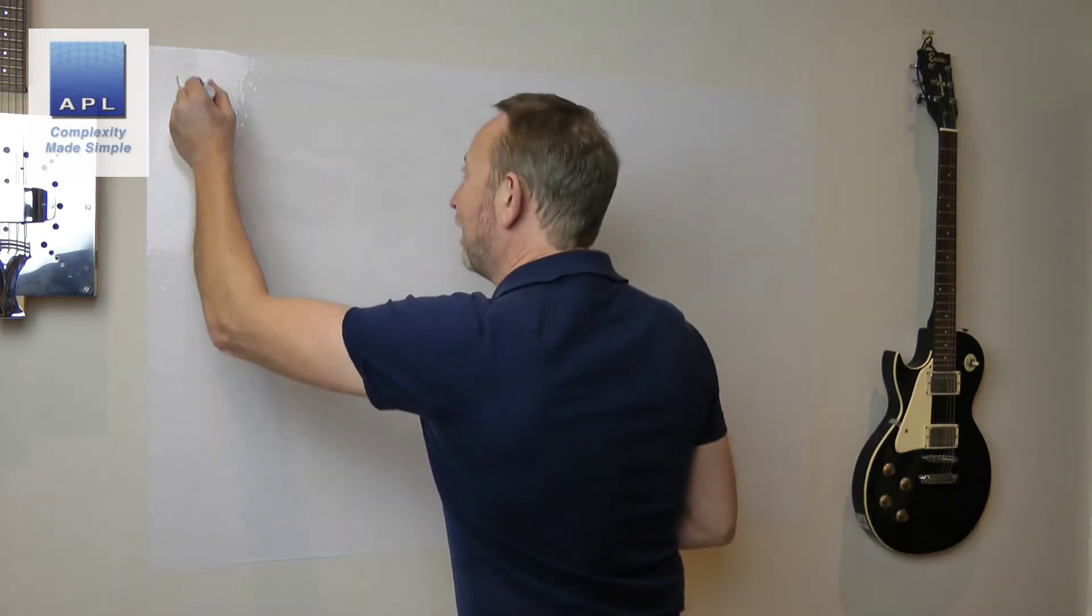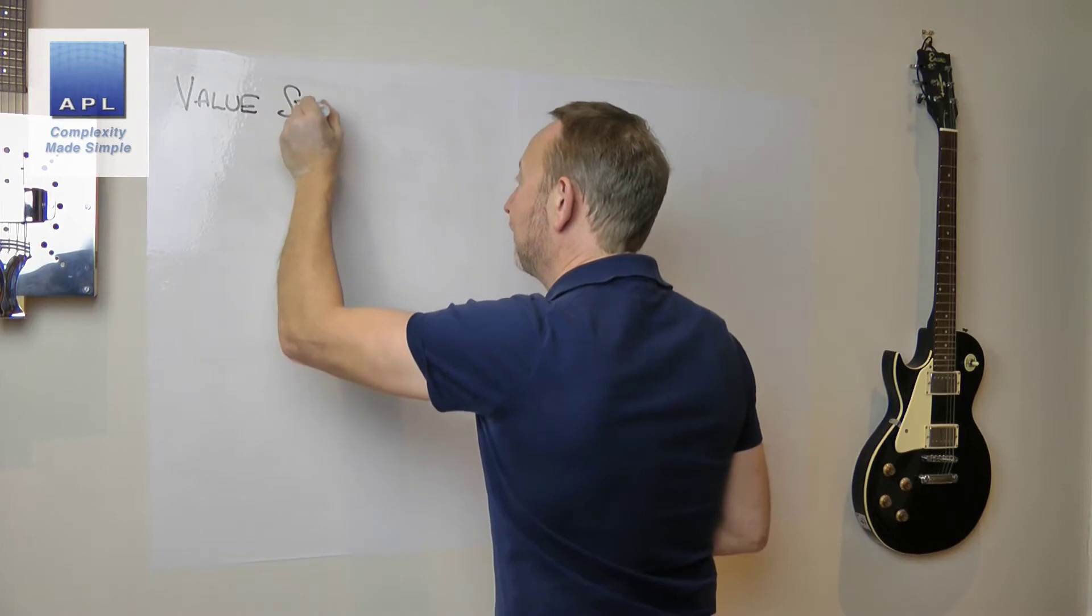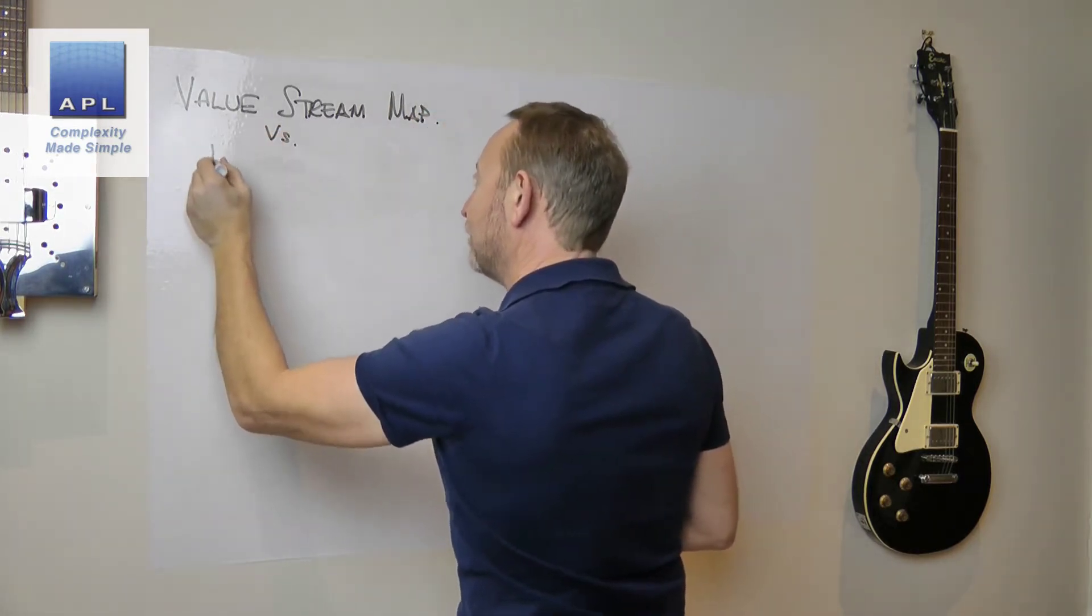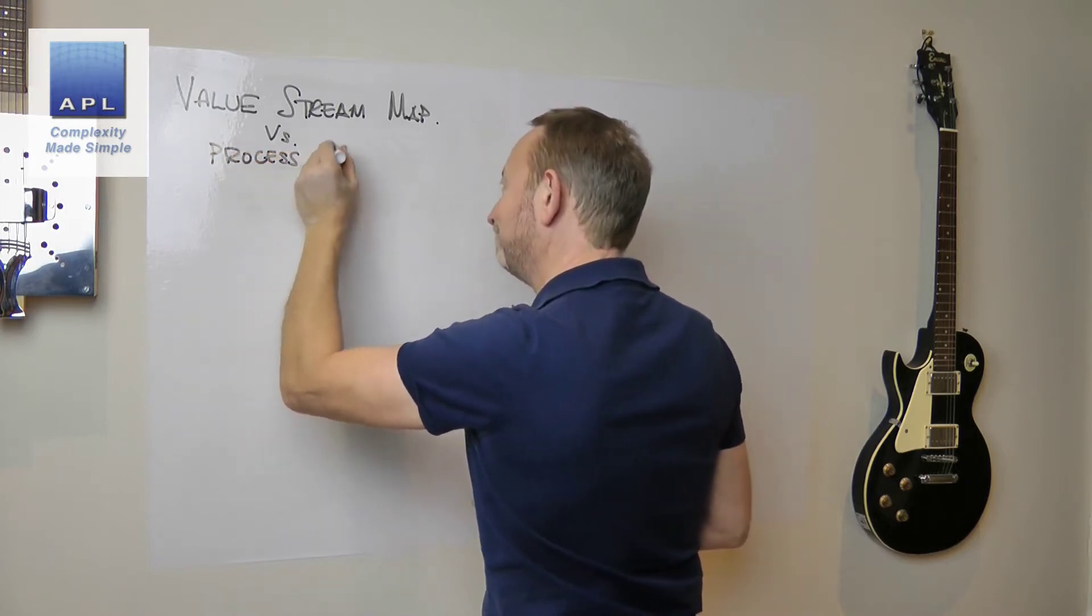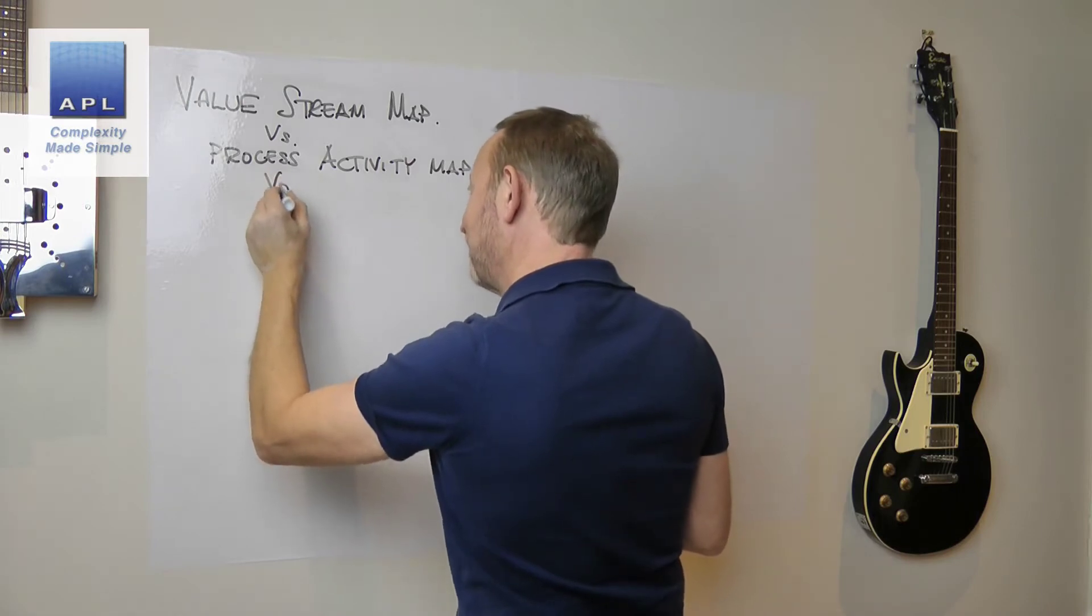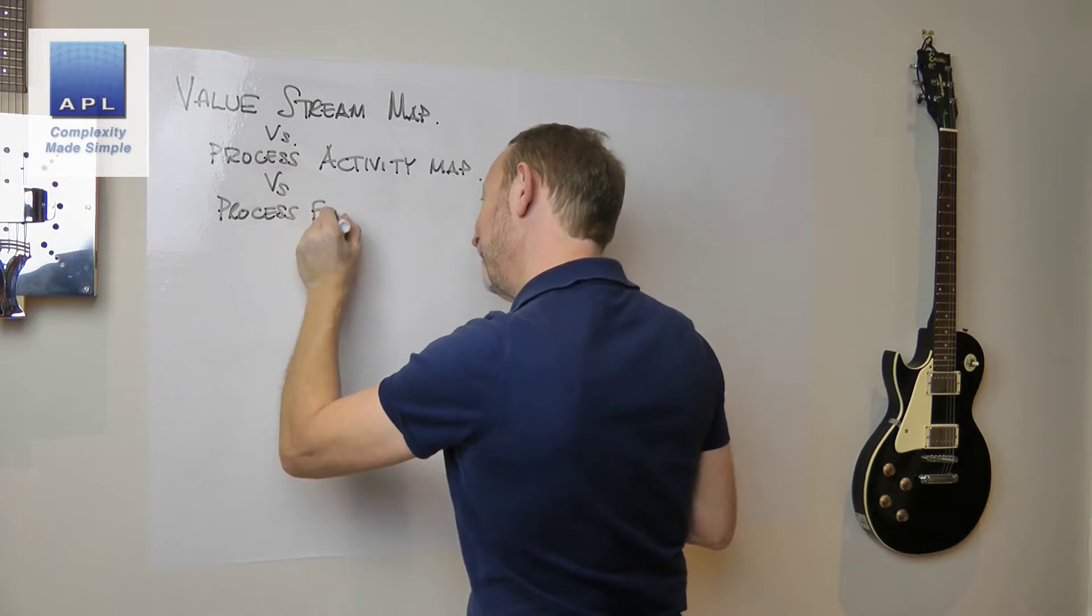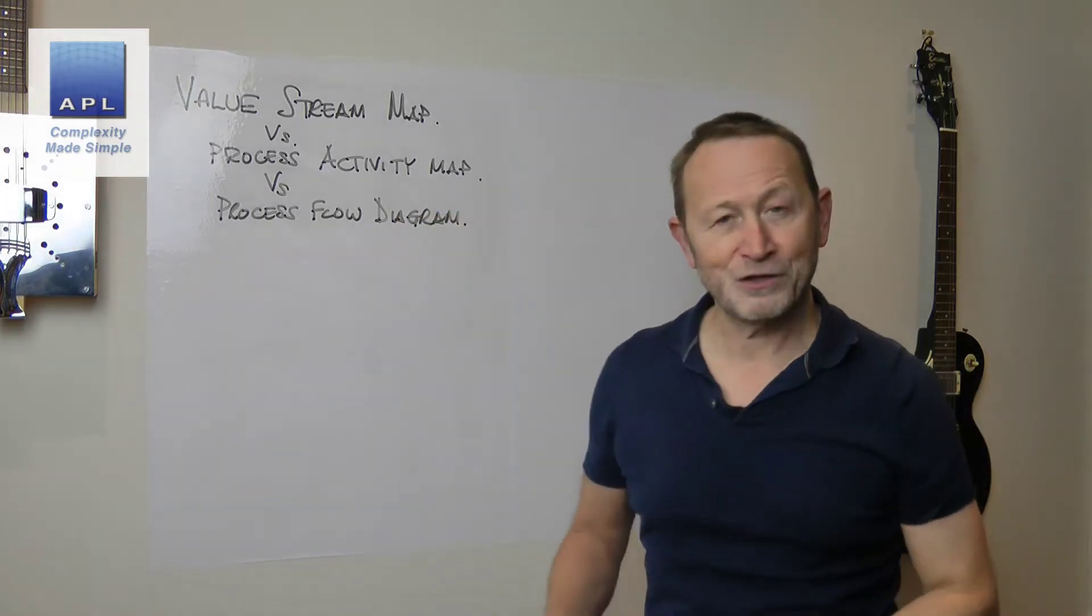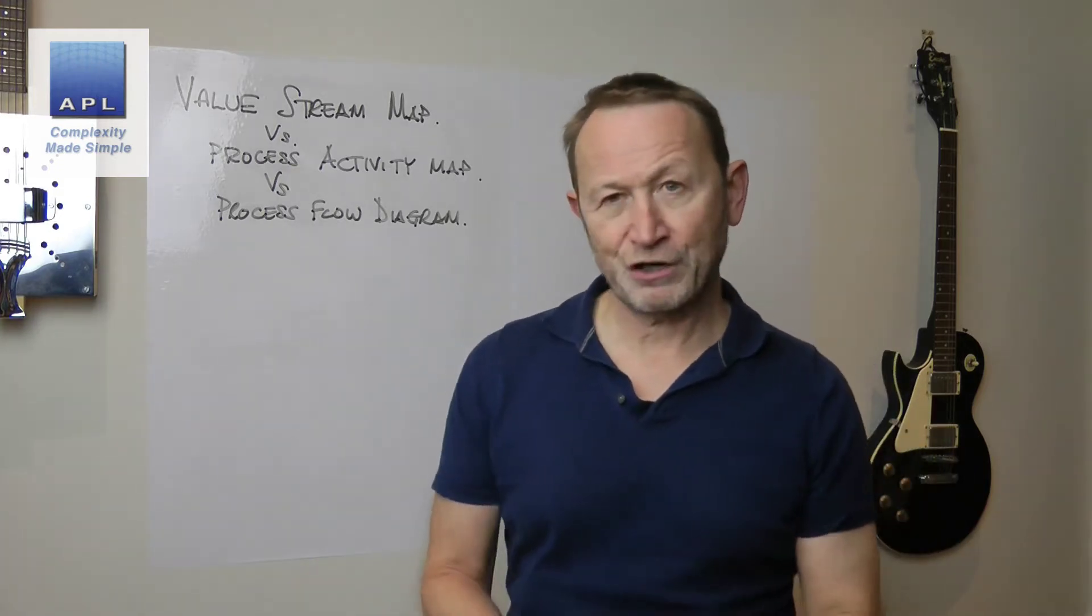Welcome to the latest video. Someone asked me to talk about the difference between a value stream map and a process map. I'm going to add something to that question. We're going to look at a value stream map versus a process activity map versus a process flow diagram.